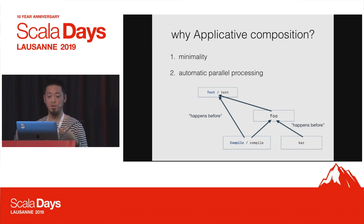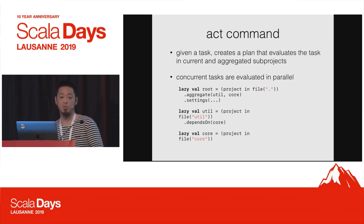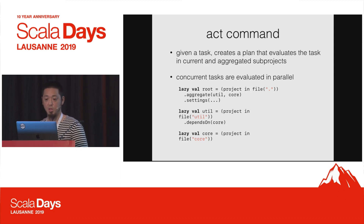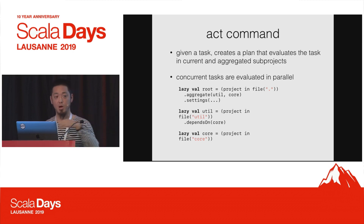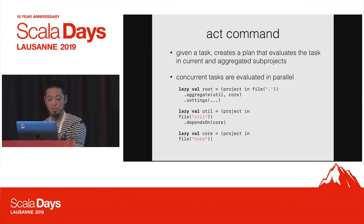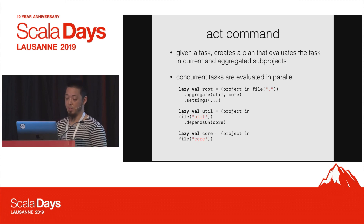Finally, we can talk about what the act command is doing. There are also minor details around `aggregate`. If you have a multi-project build, `aggregate` broadcasts task processing to the current sub-project as well as the ones listed in the aggregate list. So if you're in the root, it triggers `util/compile`, `core/compile`, and `root/compile` and does parallel processing of the typed task. That's what the act command is doing.